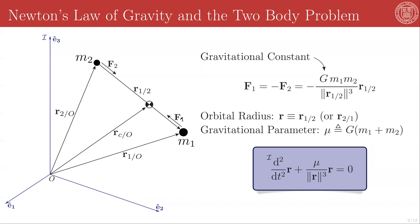F1 is the force of gravity on M1 due to M2, and F2 is the force of gravity on M2 due to M1. Because of Newton's third law, these forces have to be equal and opposite, so F1 equals negative F2.